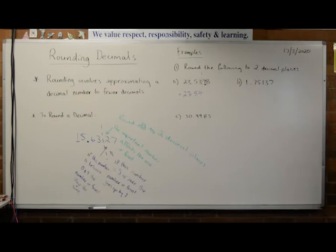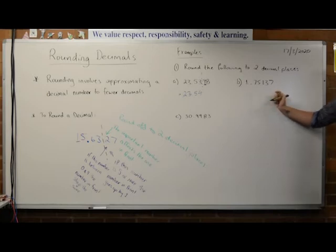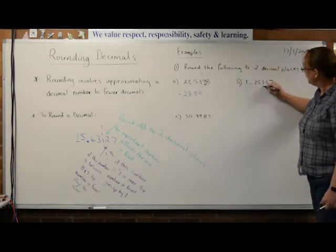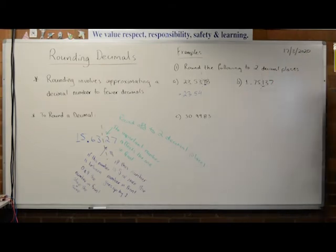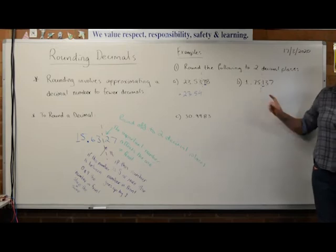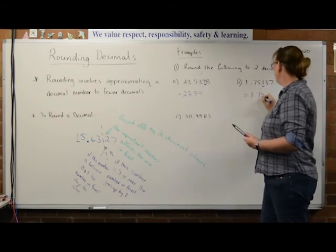Same deal, still going two decimal places. We've got 1.75137. I go two decimal places and do a line, and I find that number. Is that one five or above? No, it's between zero and four. So what's going to happen to this number? It's going to stay the same. So I end up with 1.75.